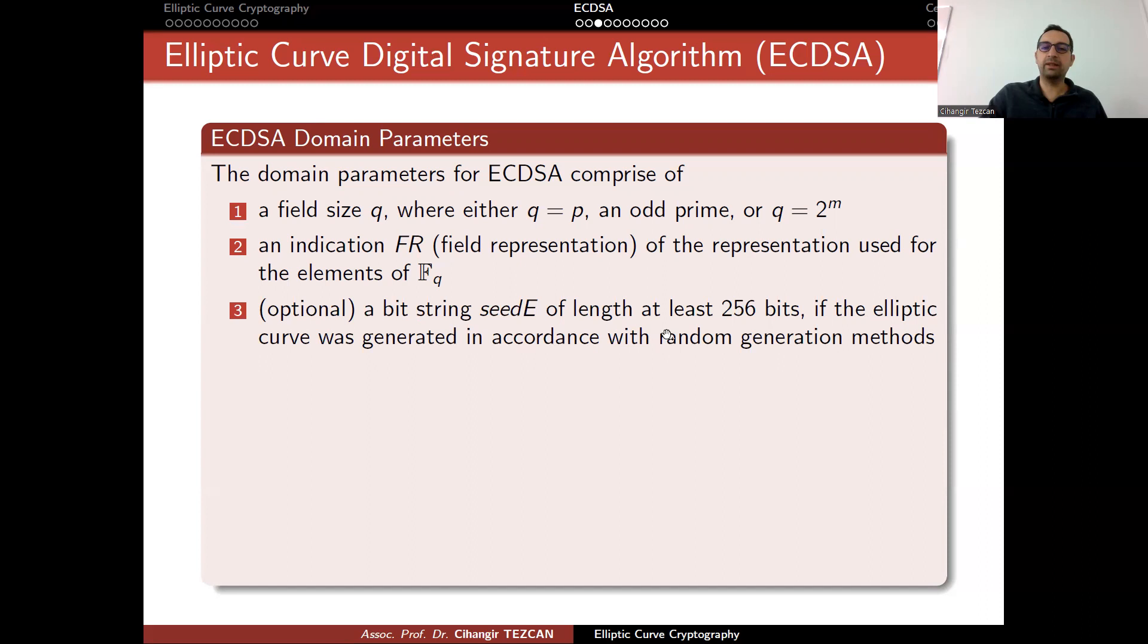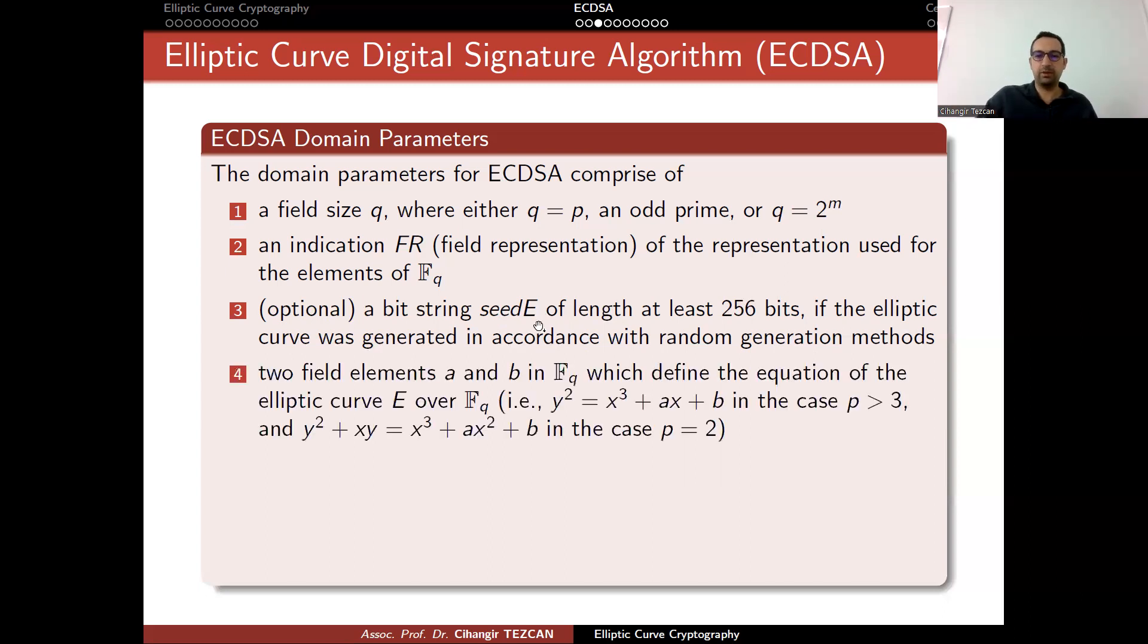Optionally, a bit string seed E of length at least 256 bits, if the elliptic curve was generated in accordance with random generation methods. Generally, you can use random curves or you can use a curve from the standard. If you are generating it randomly, then you have this optional seed value so that everybody can follow the same steps and generate the same elliptic curve. Two field elements A and B in FQ, which define the equation of the elliptic curve E over FQ.